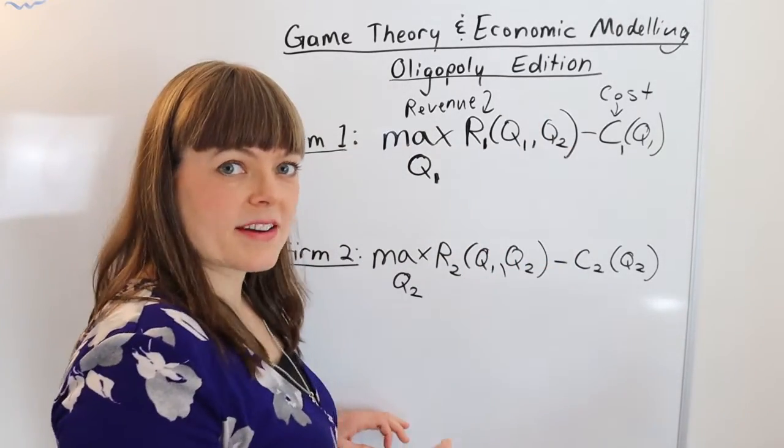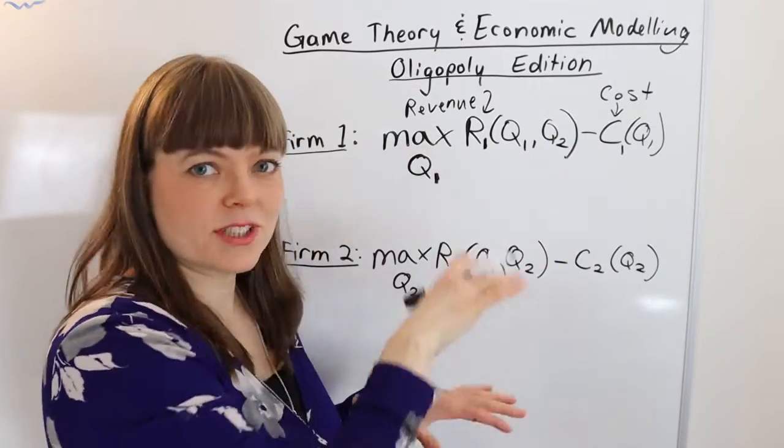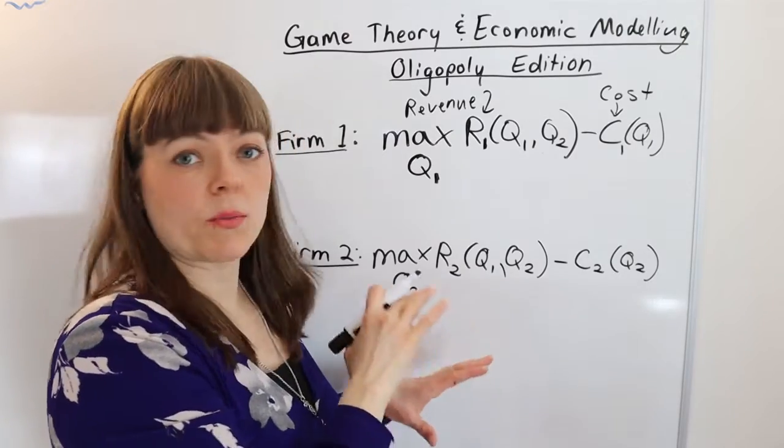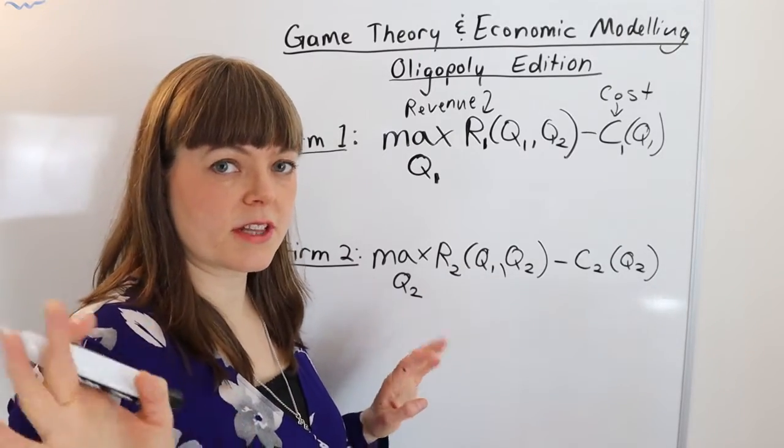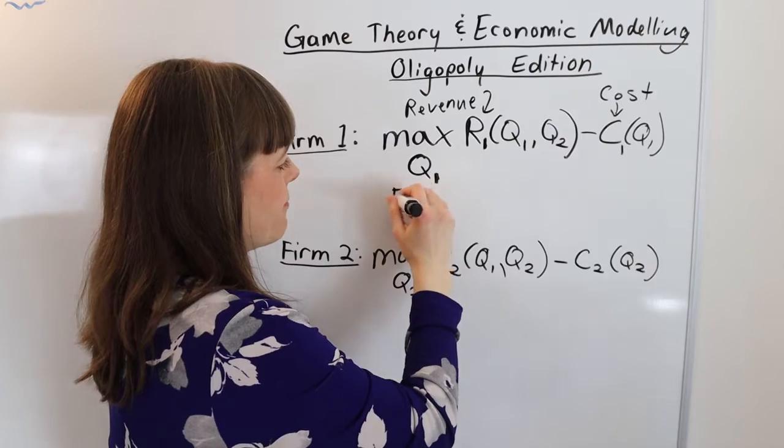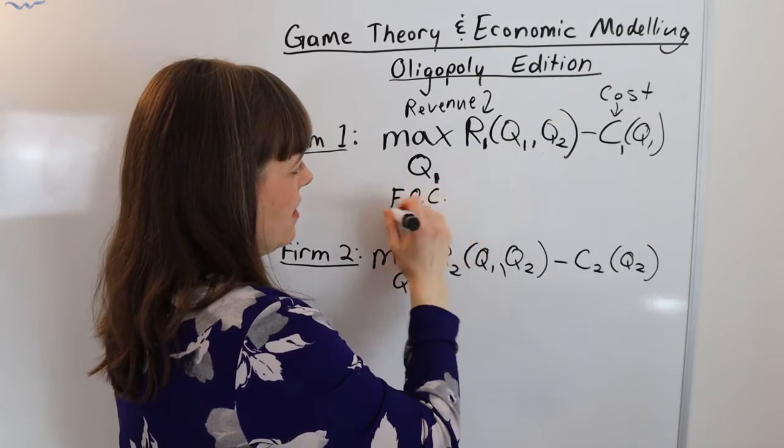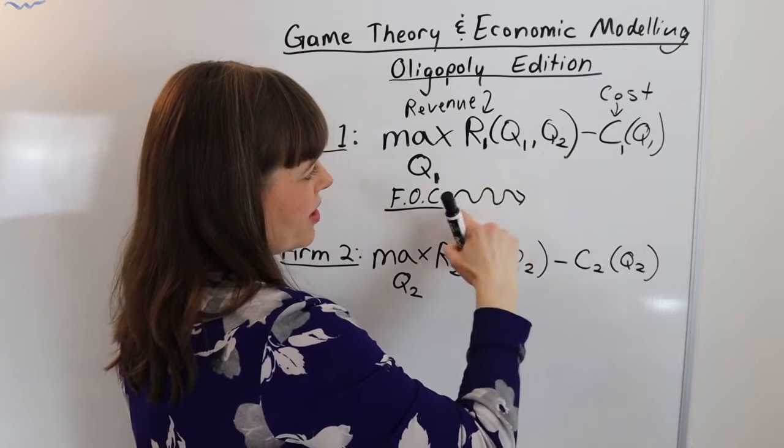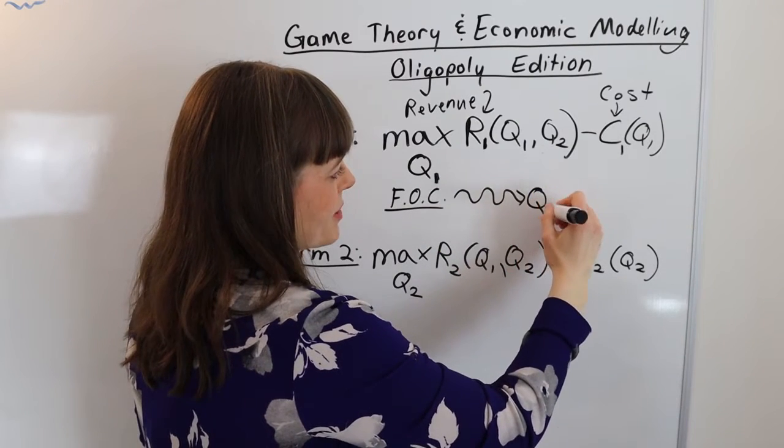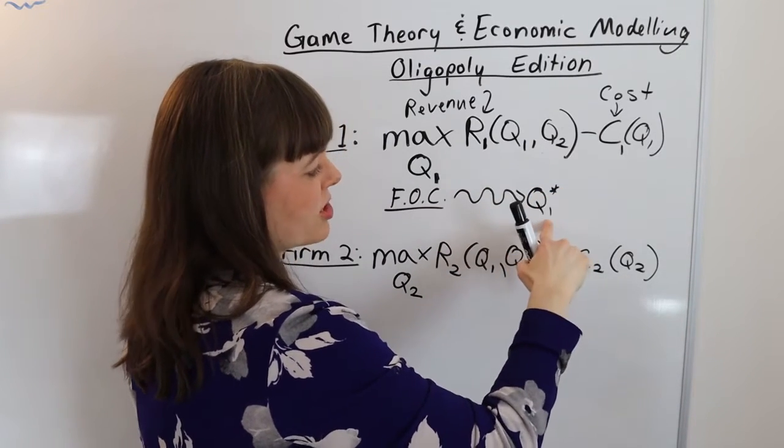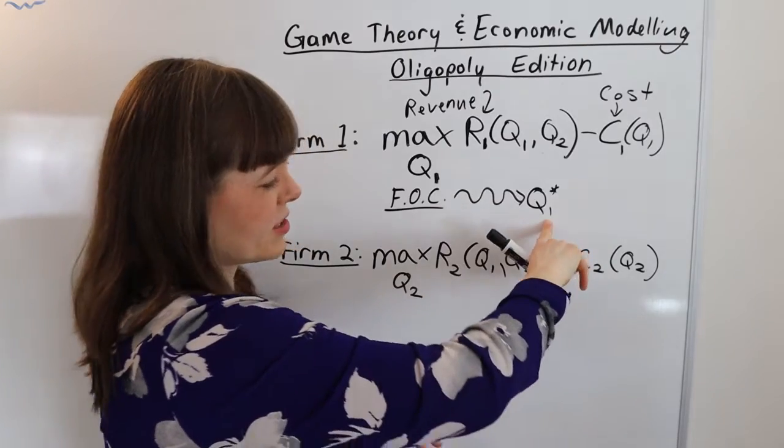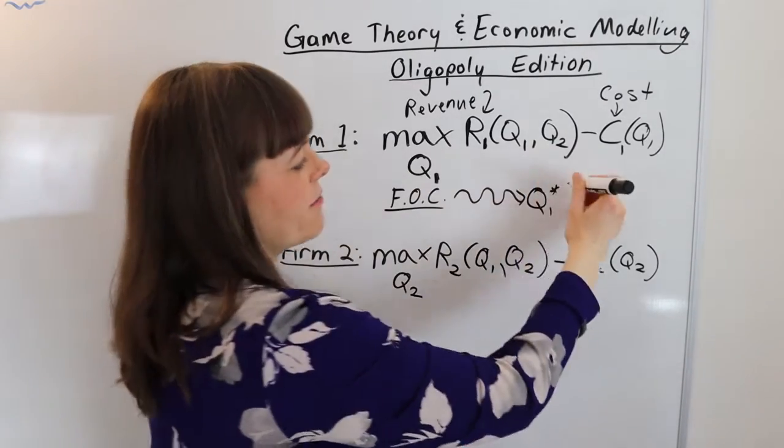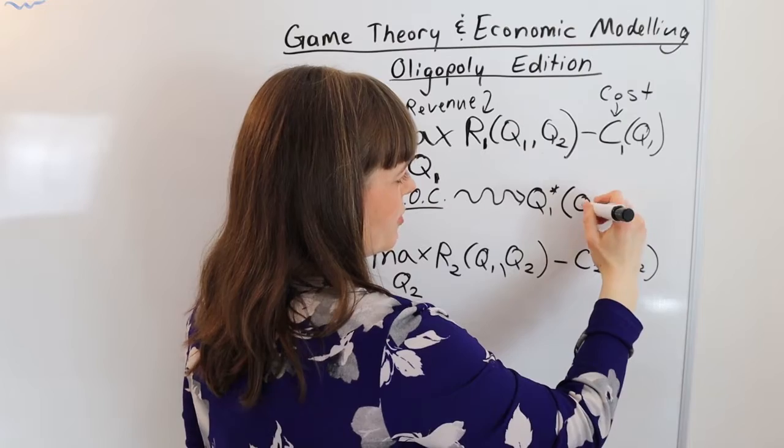And because of that we're going to end up with best response functions when we solve these models. So let's actually do this by taking the first order conditions of this optimization problem and that means there's a lot of work yada yada yada to give us the optimal choice of how much firm one should produce. Now that's going to be a function of the quantity that firm two produces.